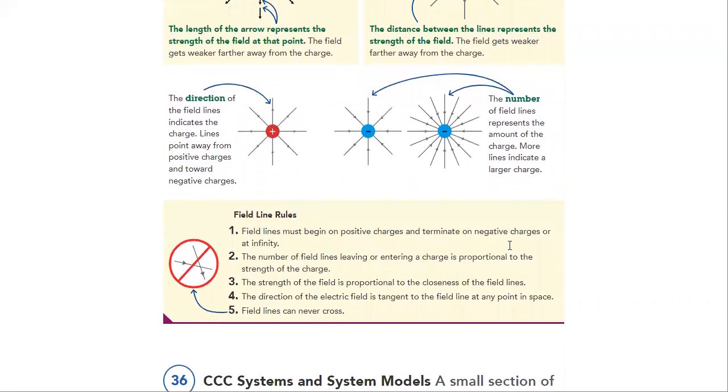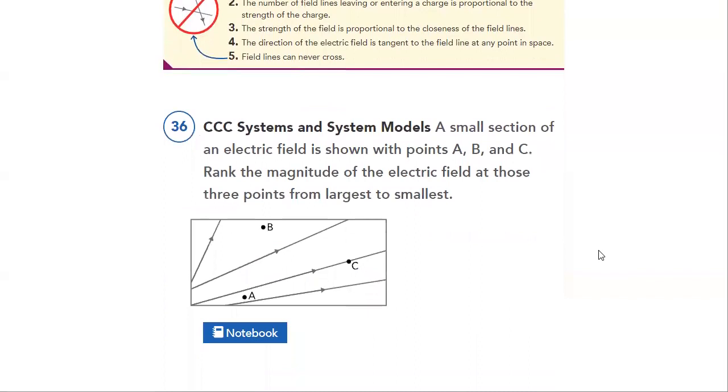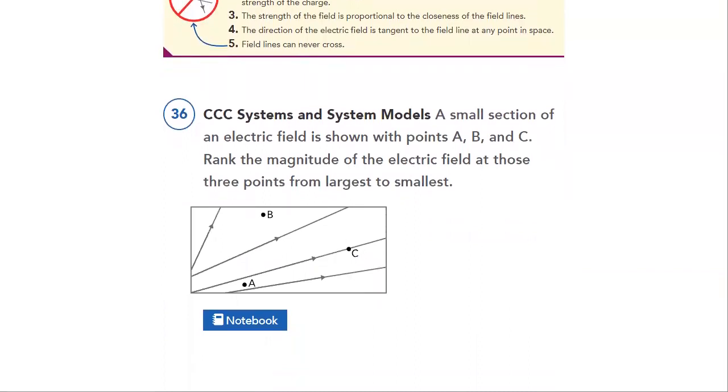And then, we see the field line rules. This is a very important thing to cover. However, field lines must begin on positive charge and terminate on negative charge or at infinity. The number of field lines leaving or entering a charge is proportional to the strength of the charge and many other points that we will cover in details in our studies.